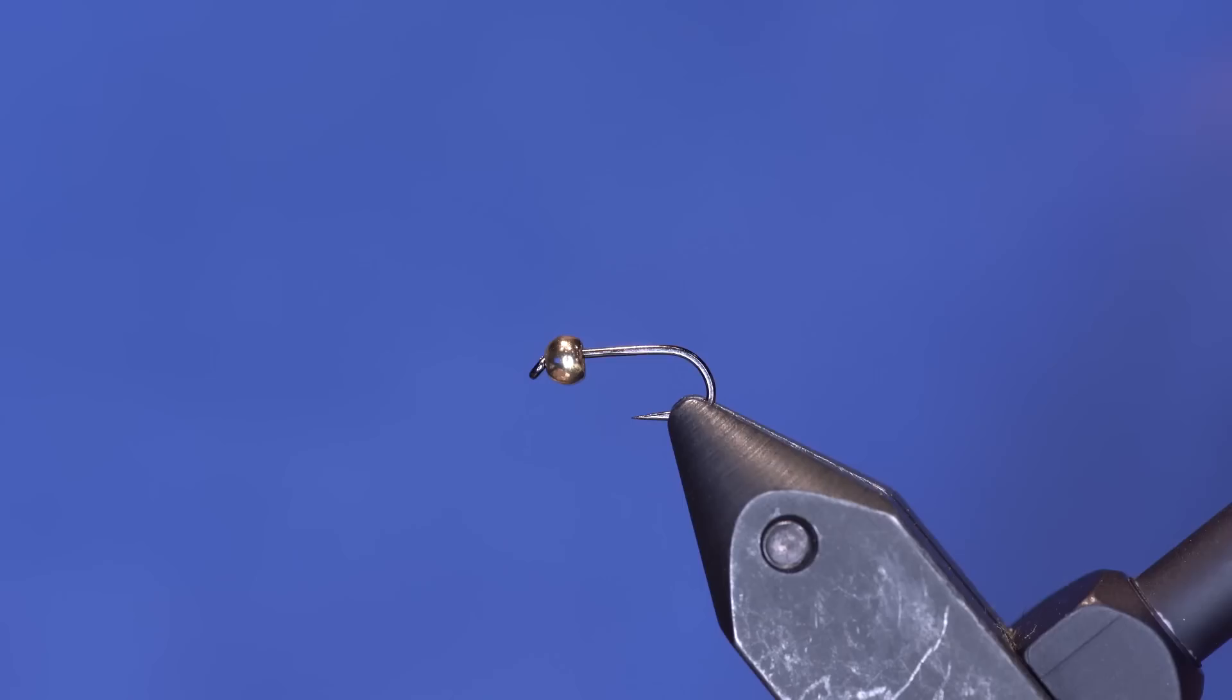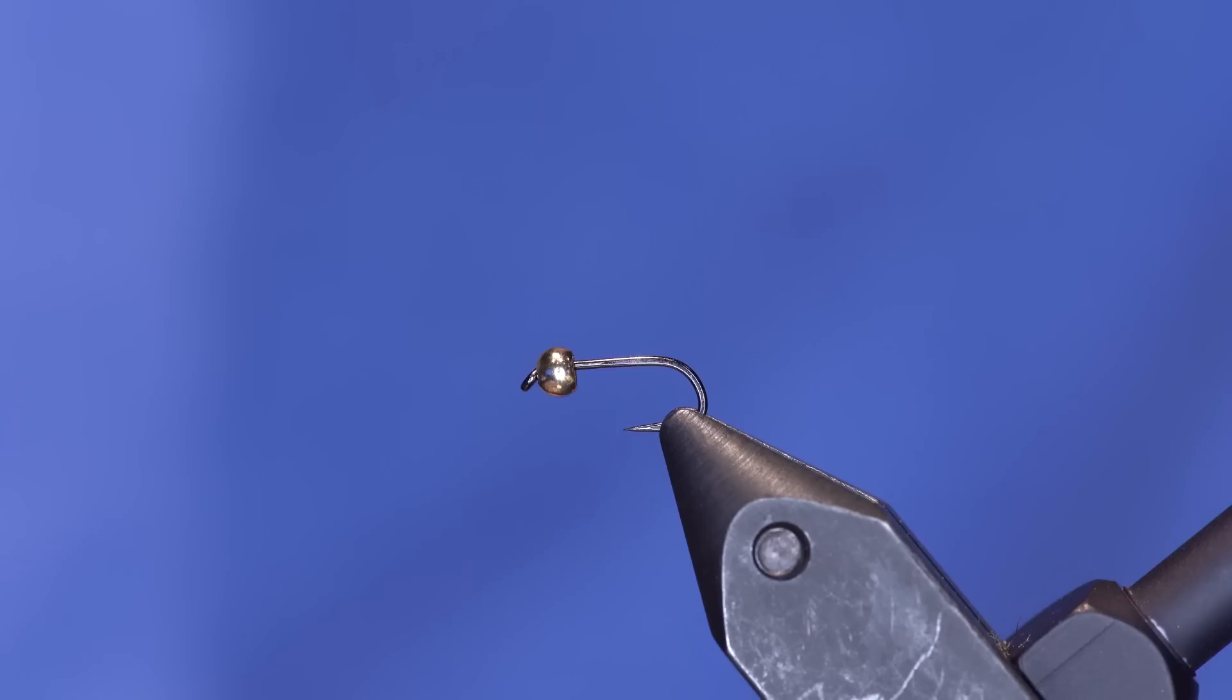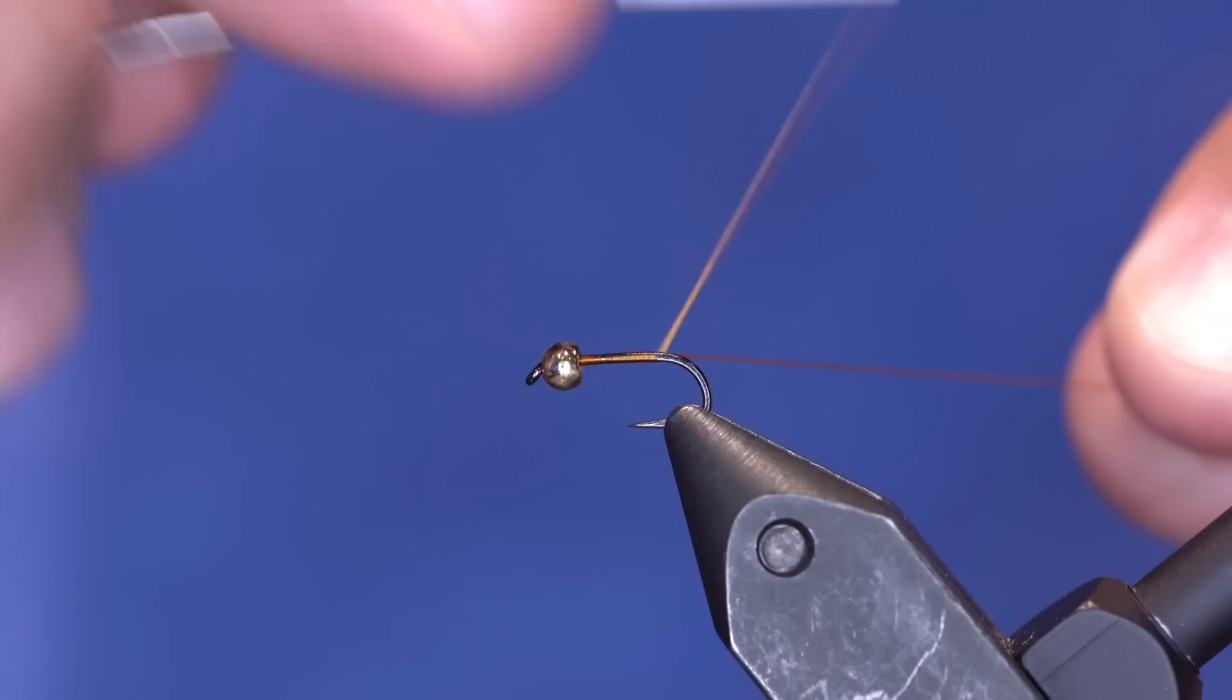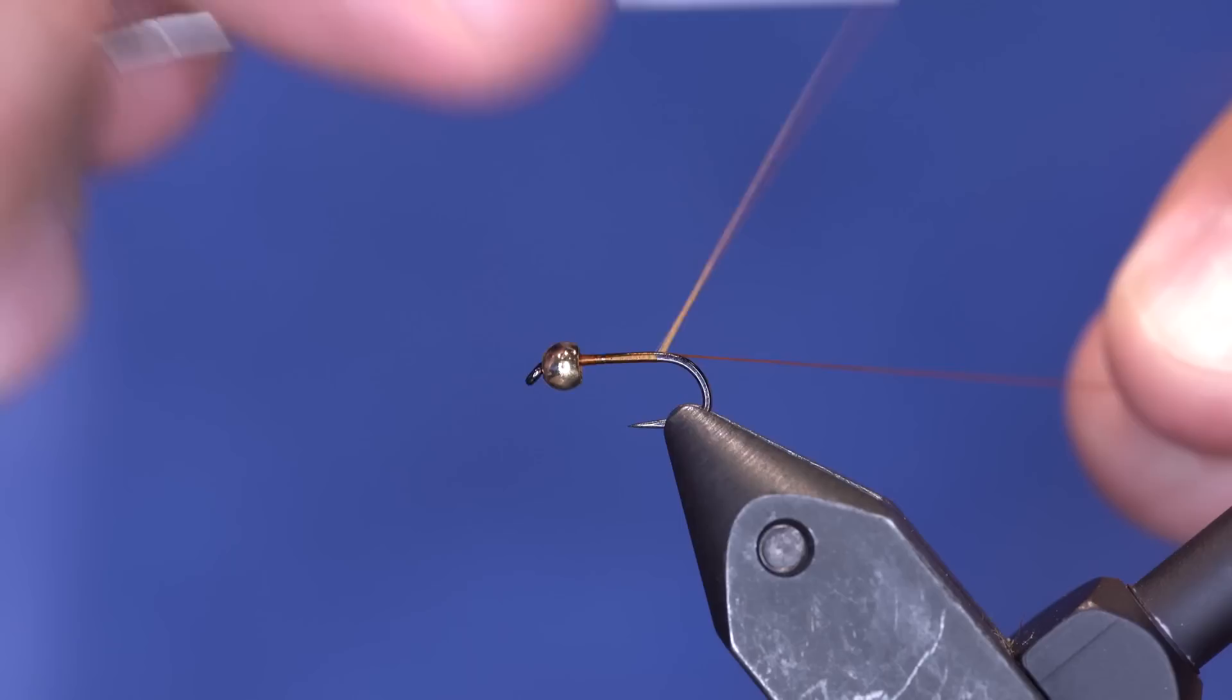So I'm just going to dress this hook up with some burnt orange thread and I'm going to be fairly thin with it. Go to the back where I'm going to tie in the tail. Nothing special on this pheasant, just a few fibers off of a good old ringneck.